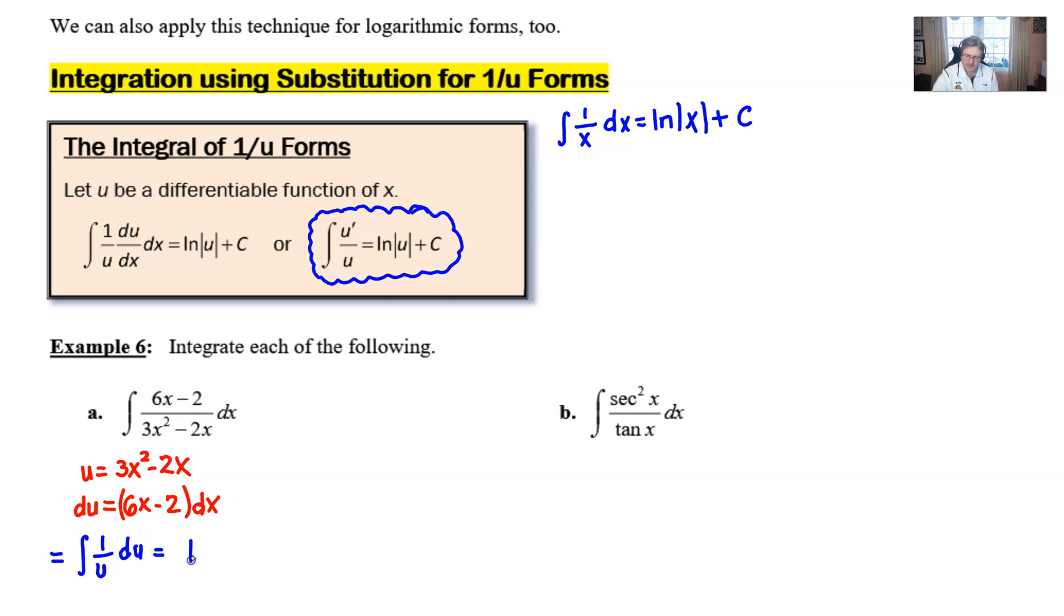And the answer is just simply the natural log of the absolute value of that u, which in this case is 3x squared minus 2x. It's really that simple. It's really one of the more recognizable instances of using u substitution integration.